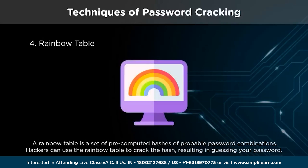Now that the passwords have been hashed, hackers attempt to achieve authentication by breaking the password hash. They accomplish this by employing a rainbow table, which is a set of pre-computed hashes of possible password combinations. Hackers can use the rainbow table to crack the hash, resulting in guessing your password. As a result, it retrieves the password hash from the system and eliminates any need to break it. Furthermore, it does not necessitate the discovery of the password itself — the breach is accomplished if the hash matches.